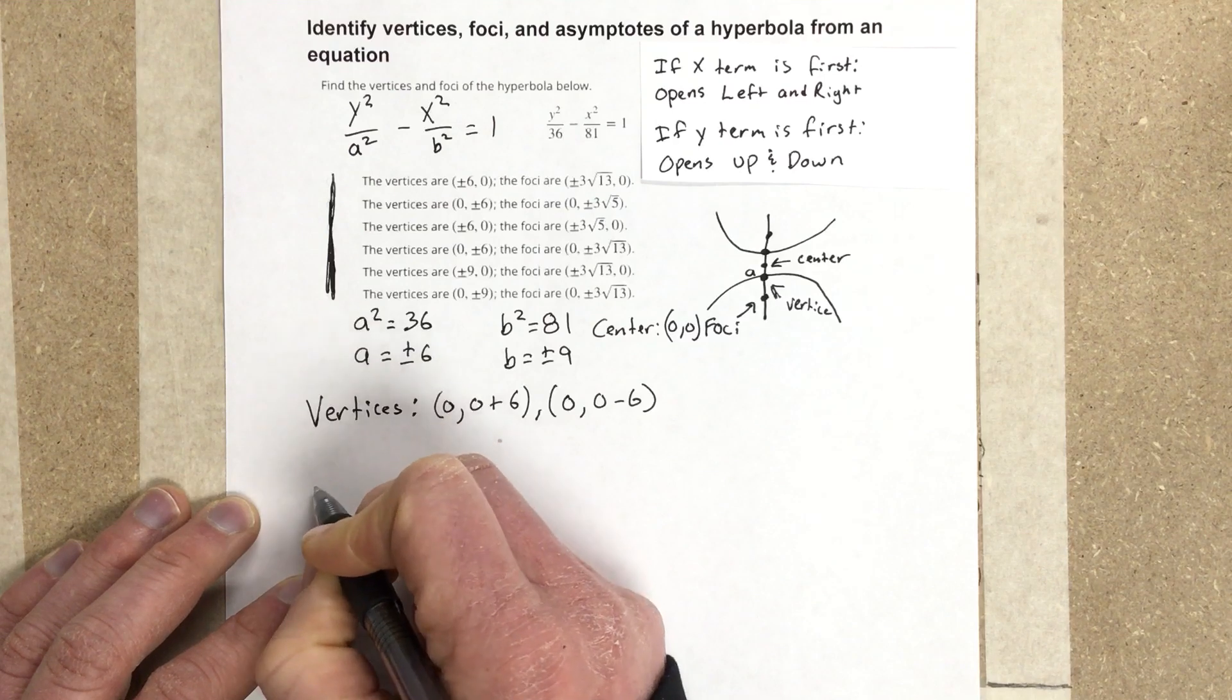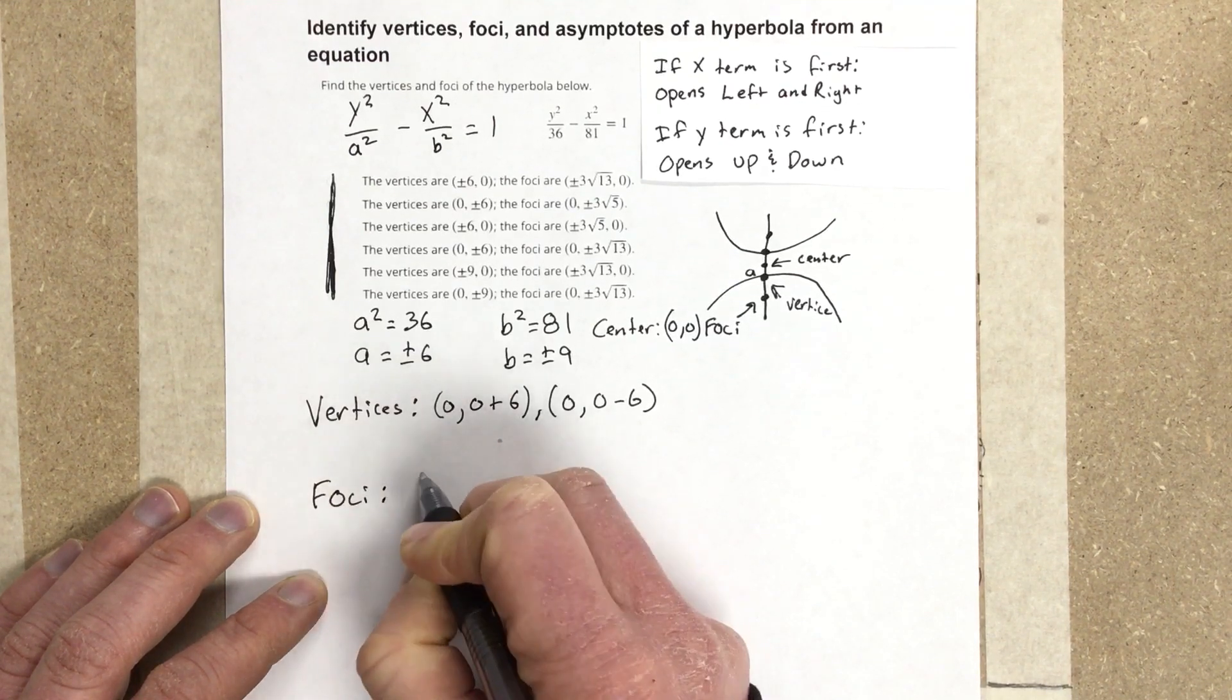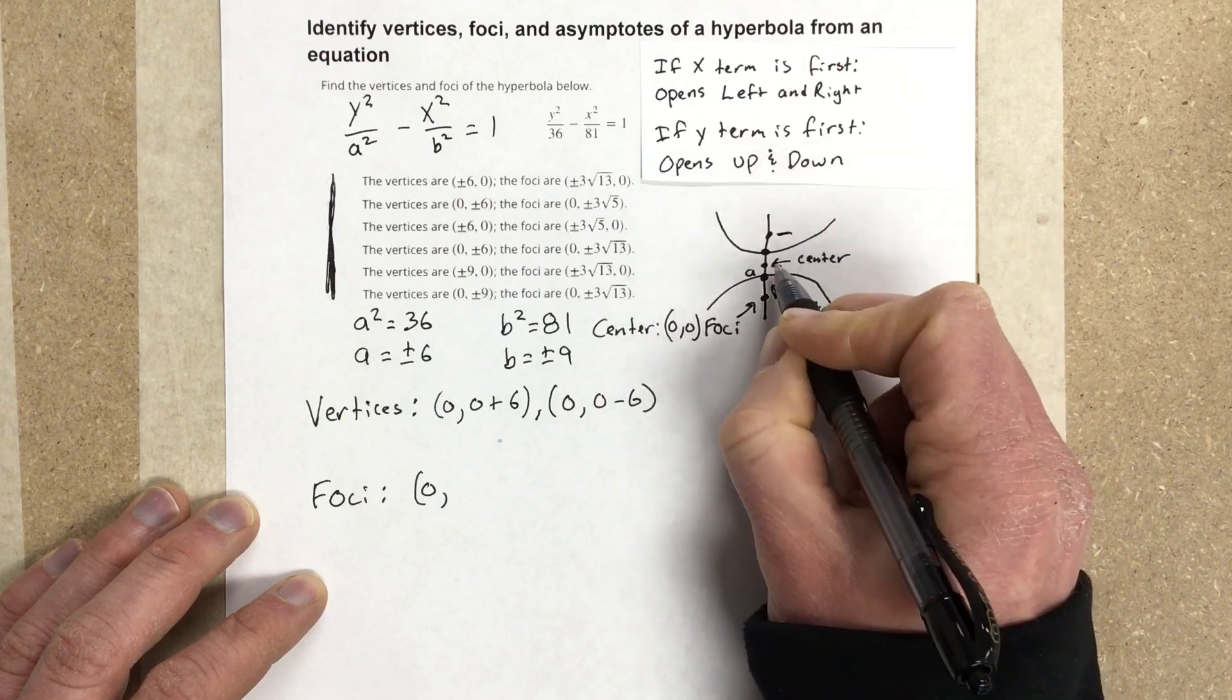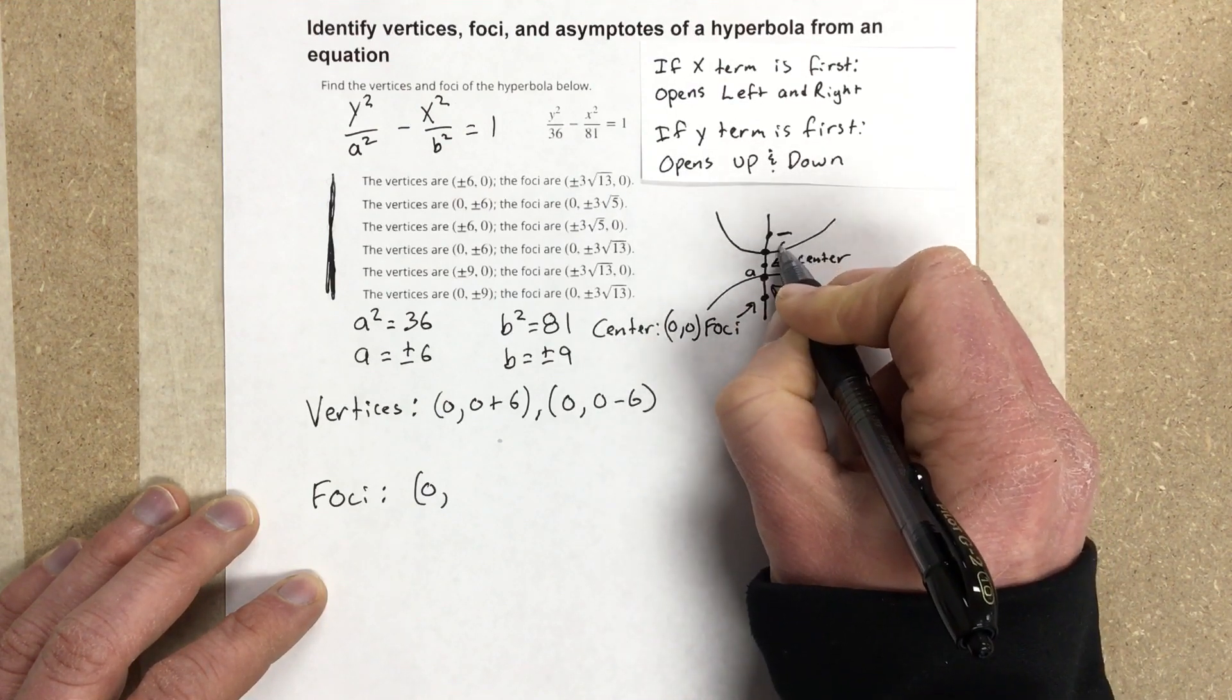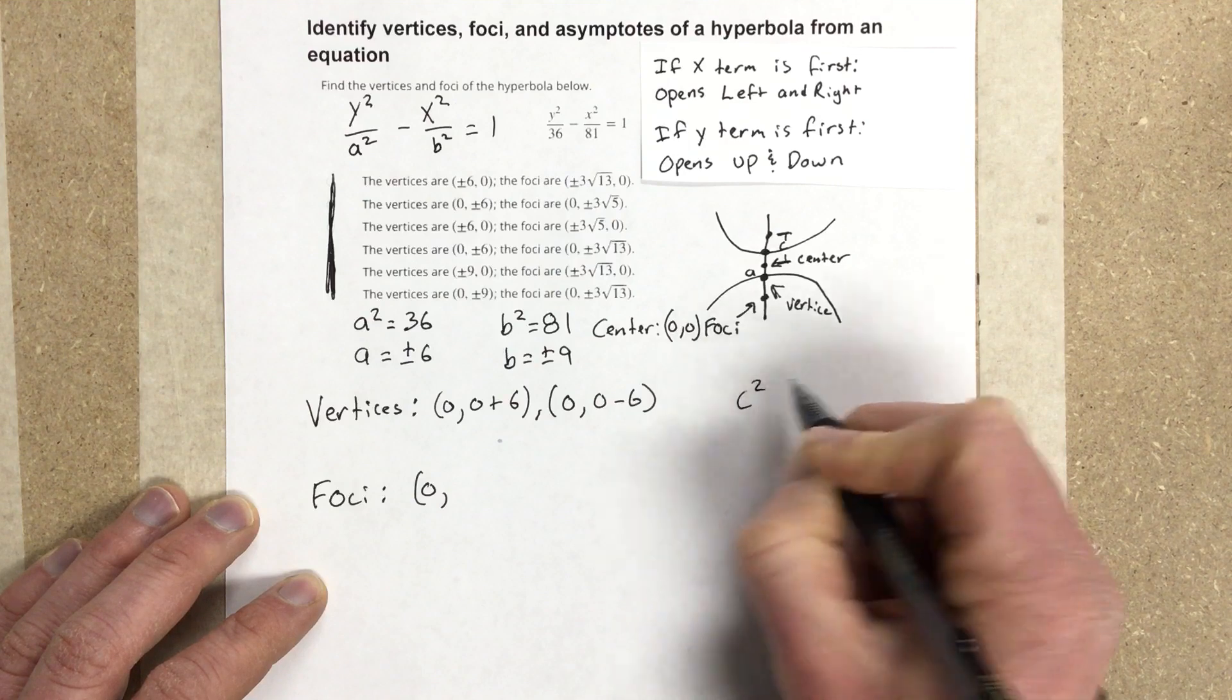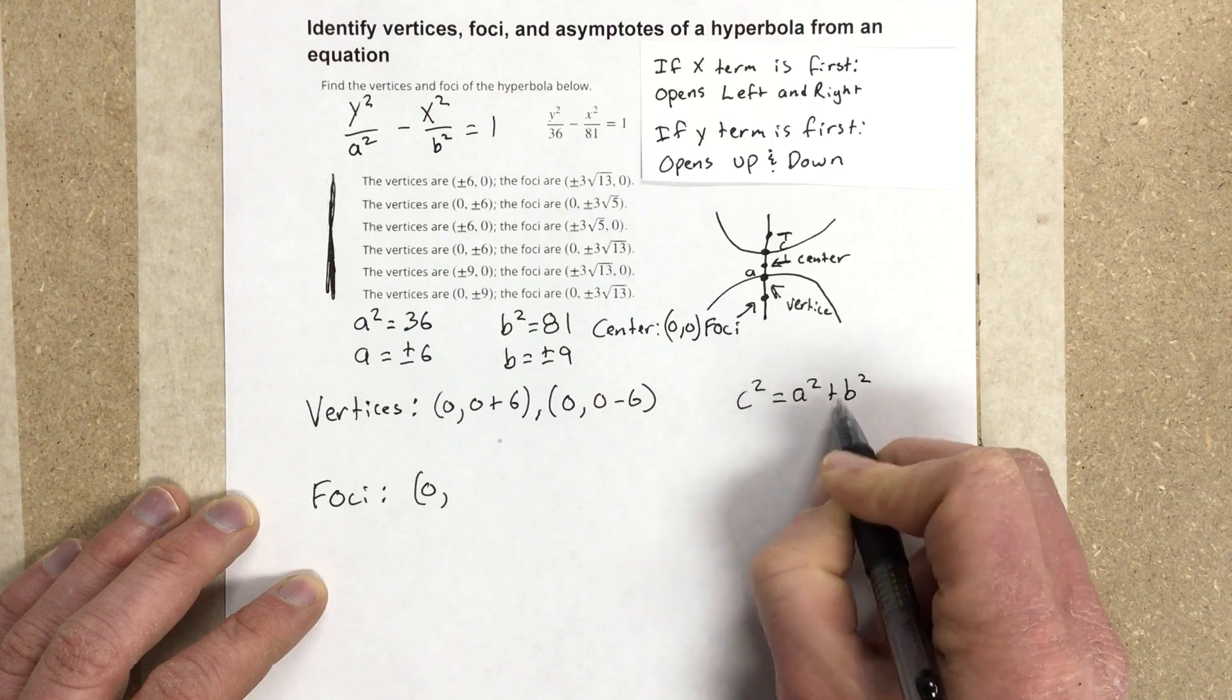If I want to find the foci, the same thing is going to occur for the foci. I'm going to have 0, 0, but this time there's a c value I have to find from the center to the foci. To find that c value, I'm going to say c squared is equal to a squared plus b squared, which is an equation for hyperbola.